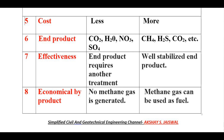End products obtained in aerobic process are CO2, H2O, NO3, and SO4. Whereas end products obtained in anaerobic process are CH4 (methane), H2S, and CO2 (carbon dioxide). Regarding effectiveness: in aerobic process the end product requires another treatment, whereas in anaerobic process well-stabilized end products are obtained. Regarding economical by-product: in aerobic process no methane gas is generated, whereas in anaerobic process methane gas can be used as fuel.